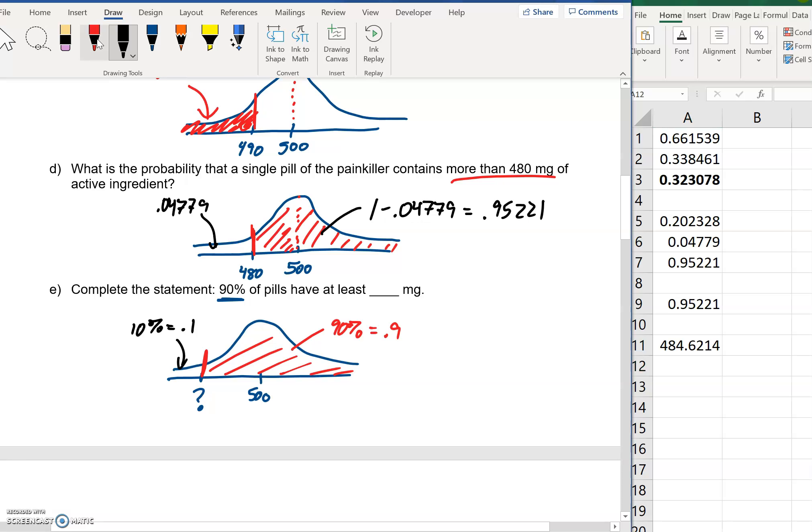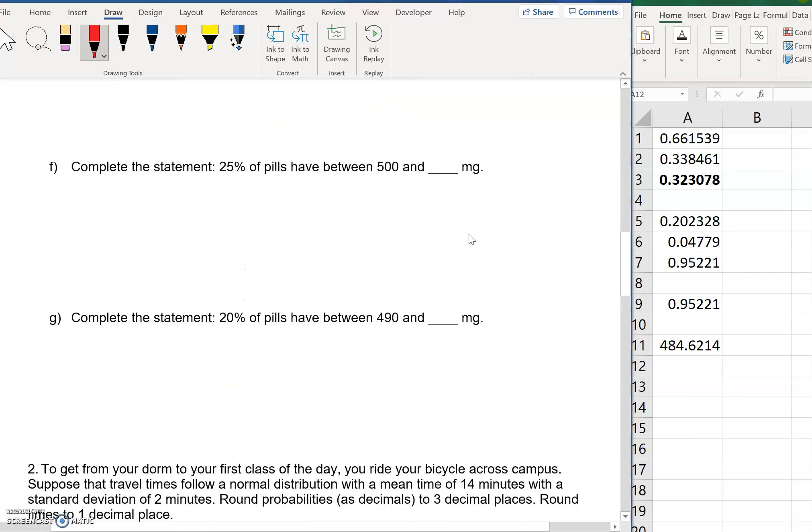And does that line up with our picture? Is it below 500? Yes. 484 is definitely below 500. So at least 484.6, and decimal places are around to the nearest thing. We can figure that out. That's fine. Just always make sure your final answer actually makes sense with your visual. This is why the visuals can be really helpful.